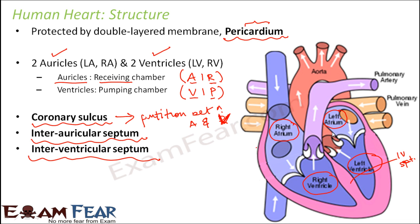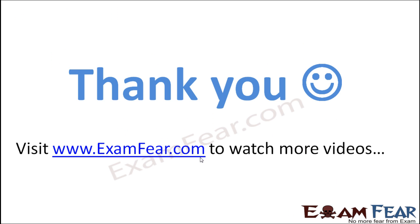Between the two auricles you will have the inter-auricular septum. Due to the presence of all these partitions — the inter-auricular septum, interventricular septum, and coronary sulcus — the heart has been divided into four distinct chambers: right auricle, left auricle, right ventricle, and left ventricle.